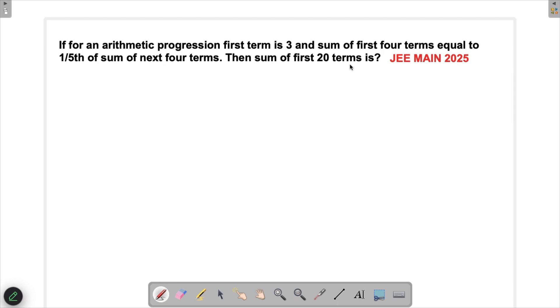then we have to find the sum of first 20 terms. Since we don't know this AP, we generally assume the first term. Let's assume the first term of the AP is a and the common difference is d.